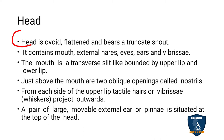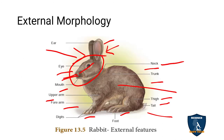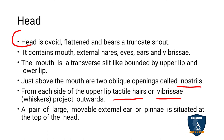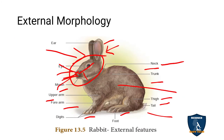The mouth has two oblique nostril openings. From each side of the upper lip, there are tactile hairs called vibrissae — similar to the whiskers seen in a cat — which are projected outwards. A pair of large movable external ears called pinnae are situated on the top of the head.